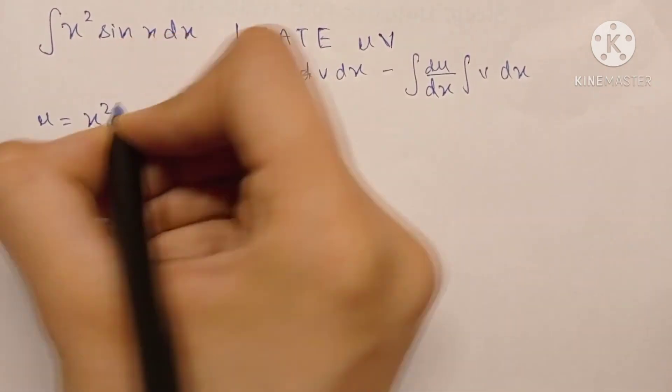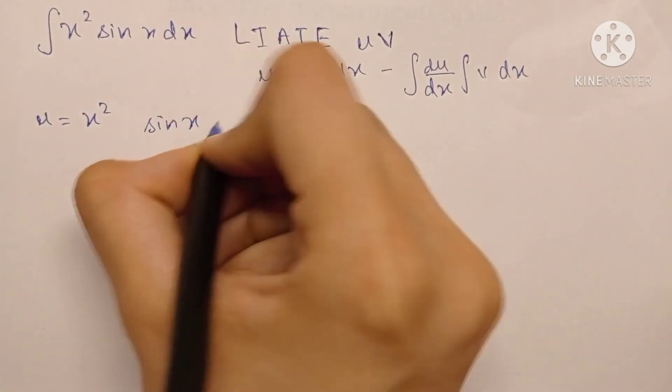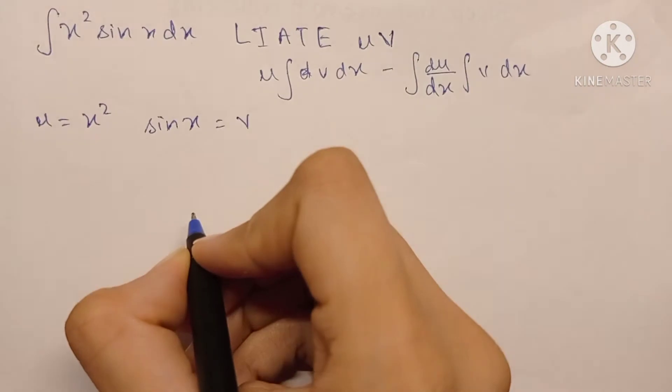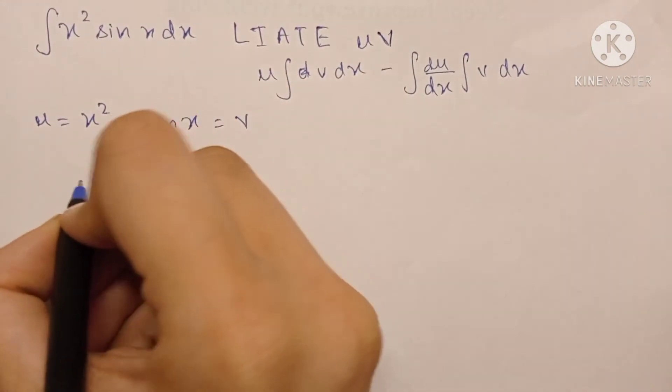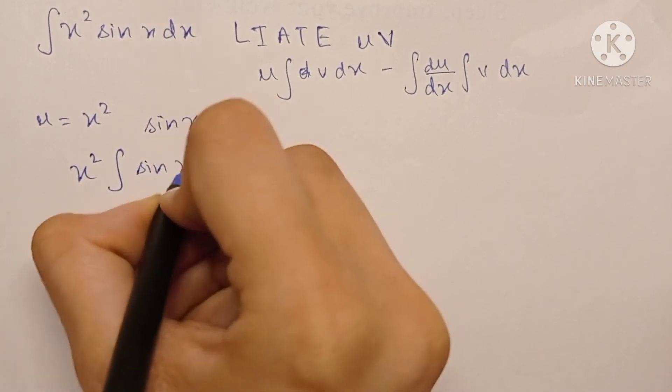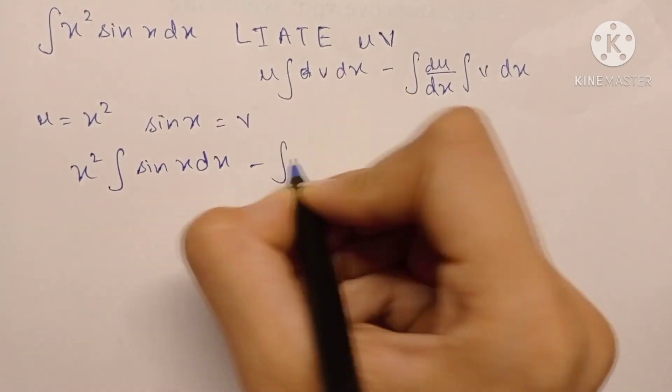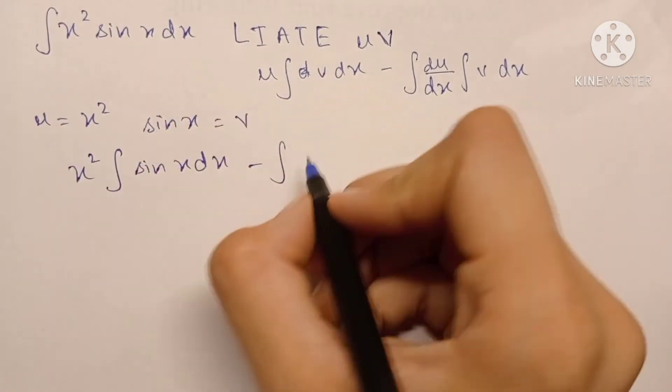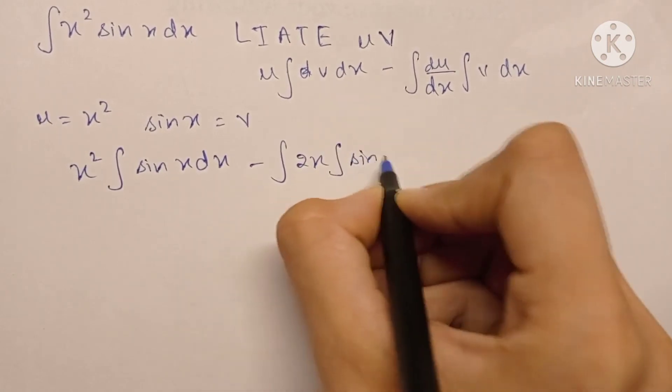So now let's start integrating. We have u into the integration of v dx minus the differentiation of u. Differentiation of u is 2x into the integration of v dx.